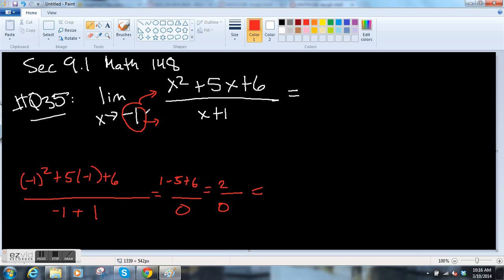So what this tells us, the nice thing about doing this part first, plugging it in to try, is this tells us that the limit does not exist. DNE, I will accept DNE for does not exist.